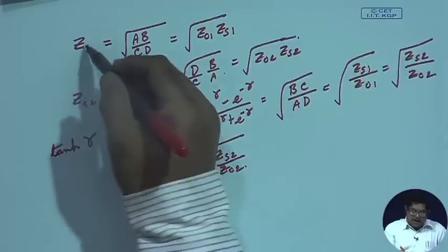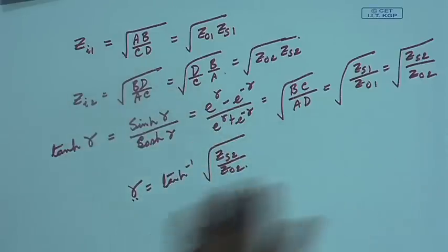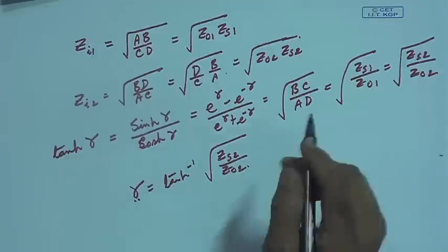Image impedances Z_i1, Z_i2 and gamma completely characterize a reciprocal two-port network, and I have shown they can also be measured via open-circuit and short-circuit tests. So there is no difficulty — any reciprocal lossless two-port network can be represented in terms of Z_i1, Z_i2, and gamma. An alternate characterization of two-port networks uses Z_i1, Z_i2, and gamma. In the next class we will introduce the concept of symmetrical networks and simplify this procedure. Thank you.